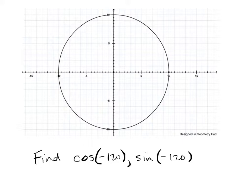Yeah, because instead of going this way, you go backwards! Okay, so with the pointer, show me where negative 120 would be.